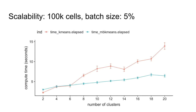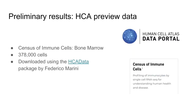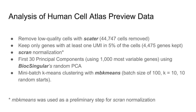These benchmarks are based on in-memory matrices because those are smaller matrices and we're still working on measuring the cost of reading mini-batches from HDF5. What I did do was run a full analysis of some of the preview data from the Human Cell Atlas using the HCA data package that Federico provided to Bioconductor. These are 378,000 cells, and I ran a full workflow removing low-quality cells with scater, filtering out some genes, doing scran normalization, then PCA with randomPCA using BiocSingular, and then running mini-batch k-means on the PCA space.